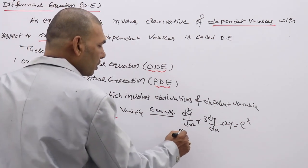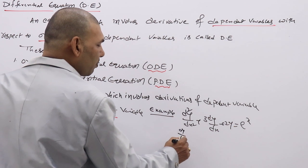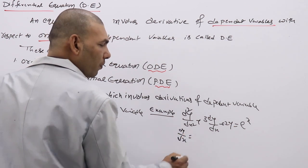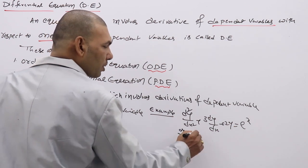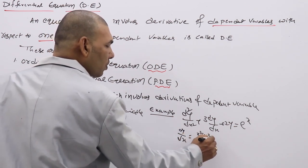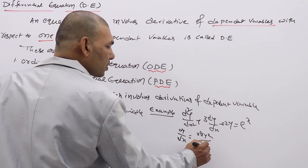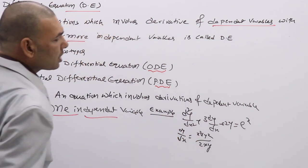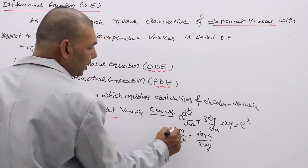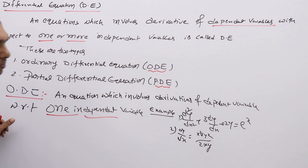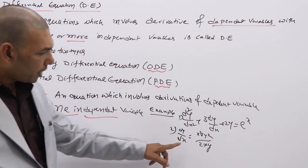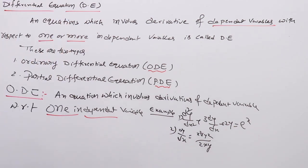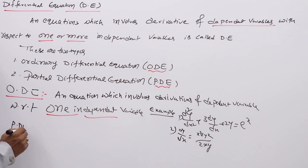Coming to partial differential equations: an equation which contains derivatives of a dependent variable with respect to two or more independent variables. These are not one independent variable — more than one. For these types of equations, we use partial derivatives.